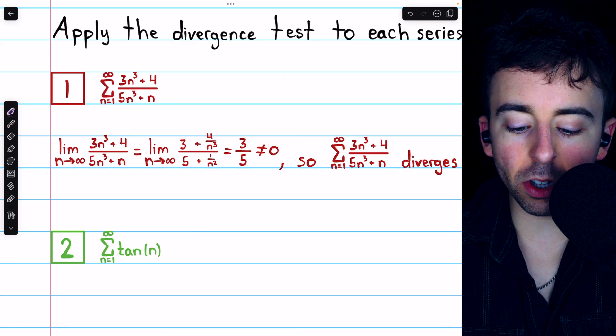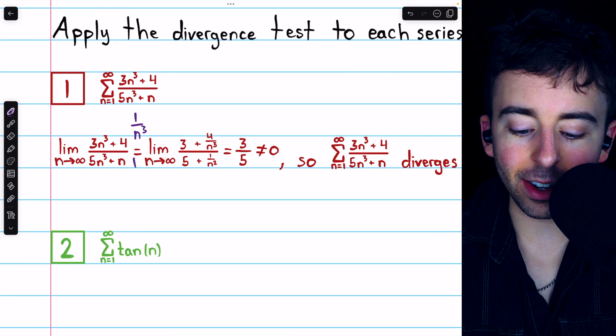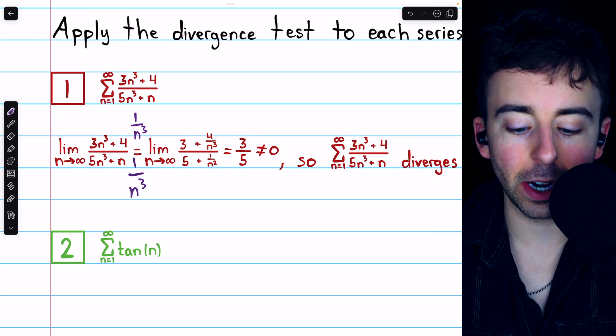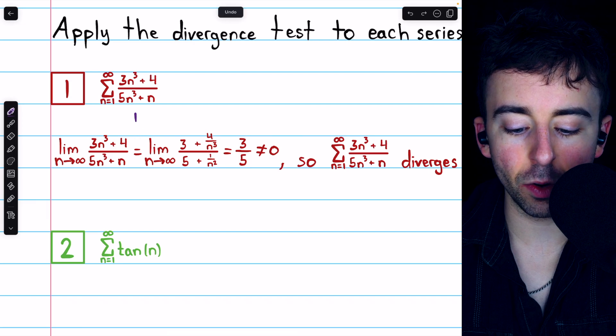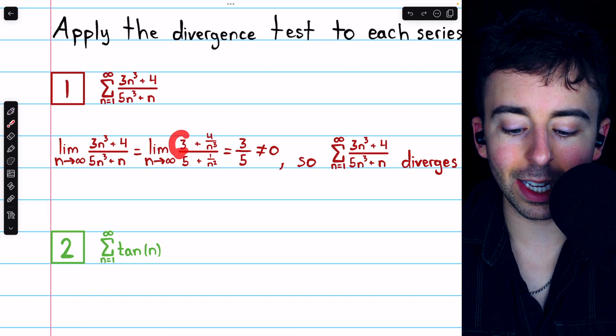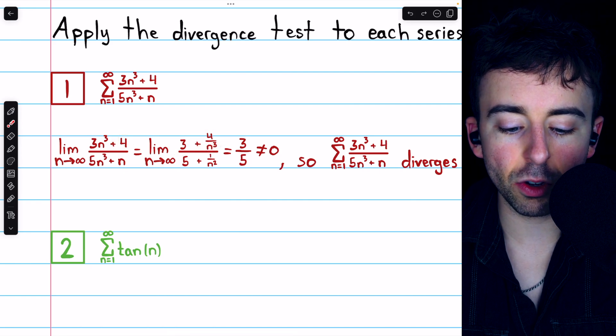What we'll do is divide the numerator by the highest power of n and divide the denominator by the highest power of n. So we're dividing the numerator and denominator by n cubed. In the numerator, 3n cubed divided by n cubed is 3, and 4 divided by n cubed is 4 over n cubed.